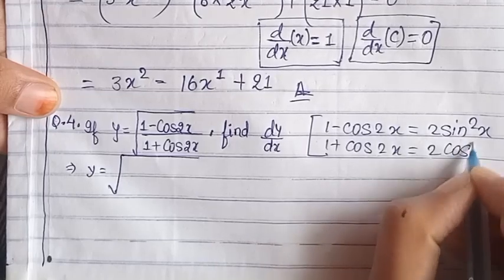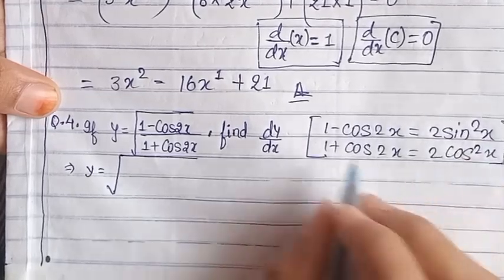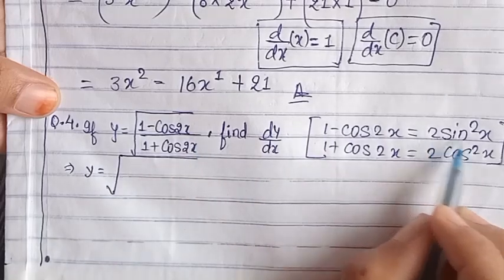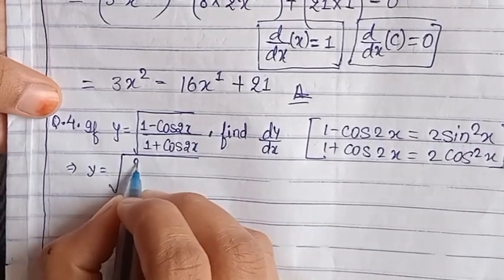1 minus cos 2x equals 2 sine squared x, and 1 plus cos 2x equals 2 cos squared x. Right. So you have to use here when you see 1 minus cos 2x, what do you do there? 2 sine squared x. Remember this formula.